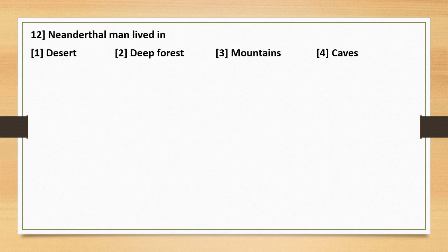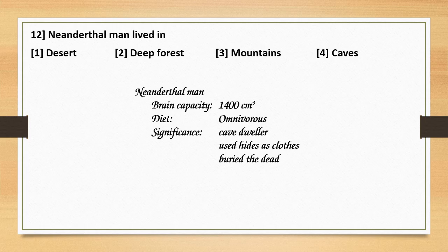Question number 12. Neanderthal man lived in: Options: 1. Desert. 2. Deep forest. 3. Mountains. 4. Caves. Neanderthal man had a brain capacity of 1400 cubic centimeters. His diet was omnivorous — he ate both meat and plant products. Significantly, he was a cave dweller, meaning he lived in caves. He used hides as clothing to cover his body and buried his dead. So Neanderthal man lived in caves. The correct answer is option 4.